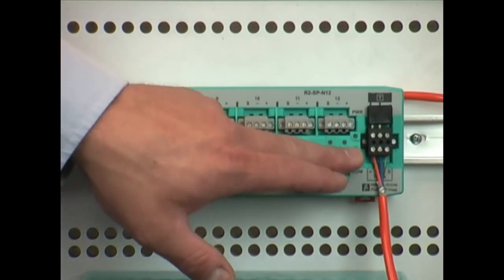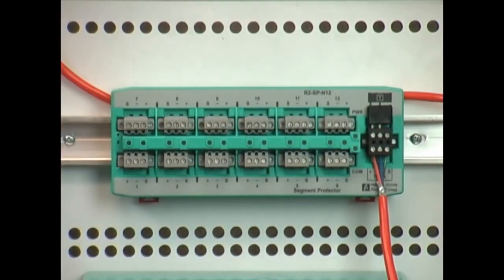Additionally you can daisy chain multiple segment protectors together using the trunk in and trunk out connection and these are used for safe area or division two applications.